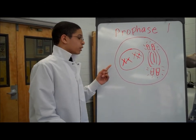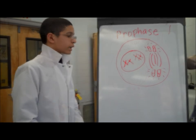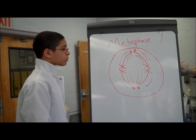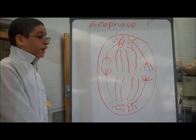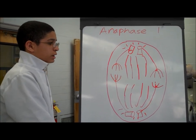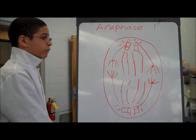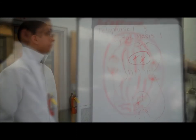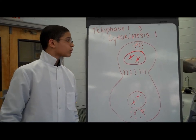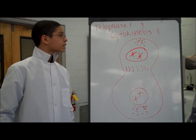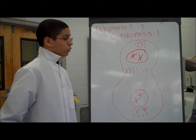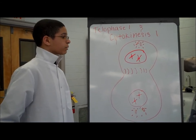Also, chromosomes line up with homologous pairs and twist together to share genetic material. The second stage, metaphase one, is where all the chromosomes line up in the midline of the cell. And in anaphase one, the third step, the chromosomes move to opposite sides of the cell, which means that your baby will have your genes as well as the father's. In telophase one and cytokinesis one, the chromosomes reach the opposite ends of the cell and the cell starts to separate. Now you have two cells containing one chromosome from each homologous pair.